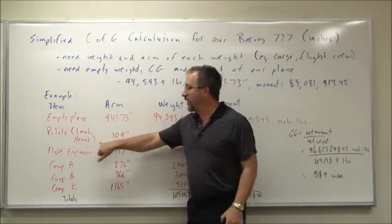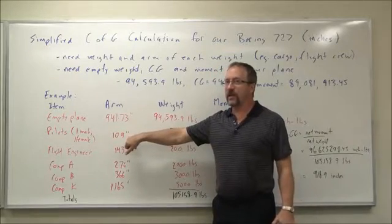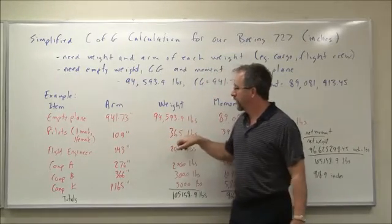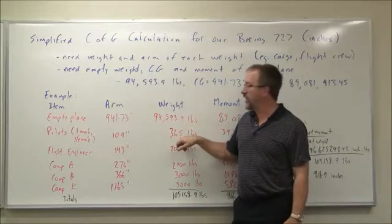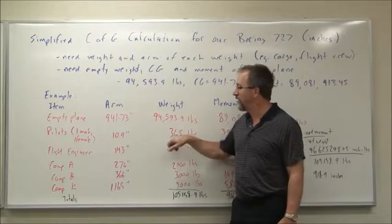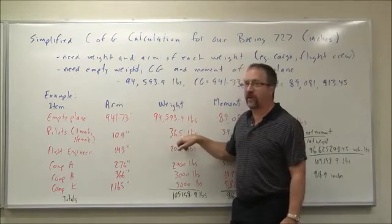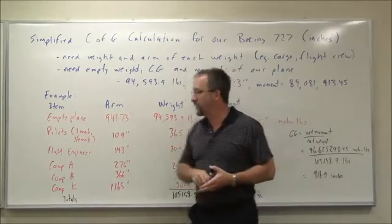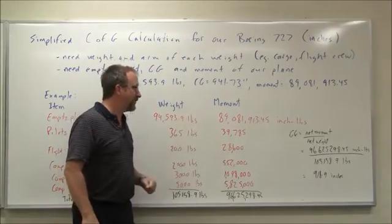Example we did in class on a male and female pilot. The arm of their seats is 109 inches. Using summertime weights as described by Transport Canada, each male would be 200 pounds, each female 165, which includes 13 pounds for their baggage each. That's 365 pounds of weight at an arm of 109 inches. Multiply those through, get a moment of 39,785.